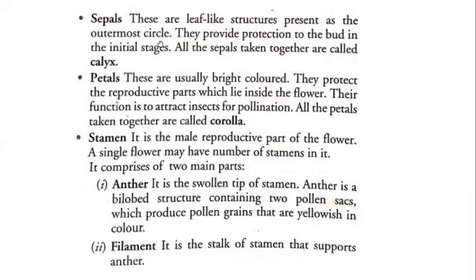In detail: Sepals are leaf-like structures present as the outermost circle. They provide protection to the bud in the initial stages. All the sepals taken together are called calyx. Their work is: when the flower is in bud form, they protect it by covering it. Petals are usually brightly colored. They protect the reproductive parts which lie inside the flower. Their function is to attract insects for pollination. All the petals taken together are called corolla.